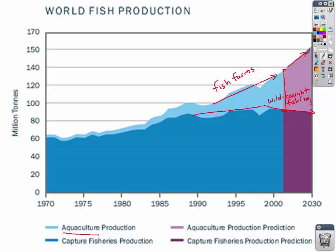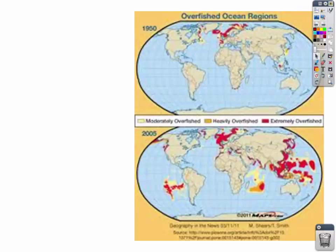Let's take a look at this map of our fisheries and the regions that have been overfished throughout history. The top map is from 1950, and the bottom map is from 2005. Looking at overall how we use our oceans, we see some general concerns.